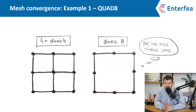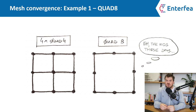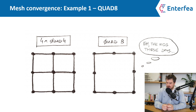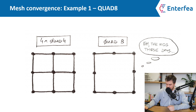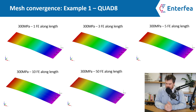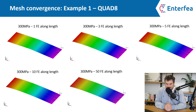So let's see how the quad eight element fares in this example. Quad eight elements are quadratic elements, which means they have additional nodes at the centers of their edges — this makes computing take longer, but they are also more accurate. And you will see that regardless of the number of elements, the answer is already correct.